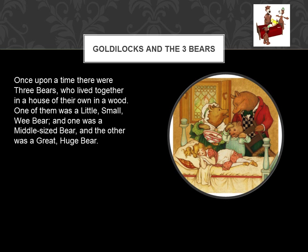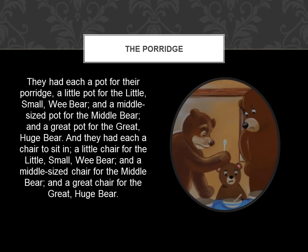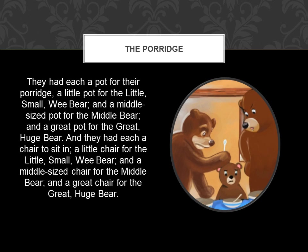Once upon a time there were three bears who lived together in a house of their own in a wood. One of them was a little small wee bear, and one was a middle-sized bear, and the other was a great huge bear. They had each a pot for their porridge — a little pot for the little small wee bear, a middle-sized pot for the middle bear, and a great pot for the great huge bear. And they had each a chair to sit in — a little chair for the little small wee bear, a middle-sized chair for the middle bear, and a great chair for the great huge bear.